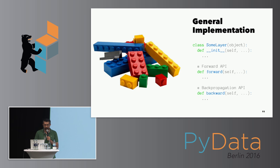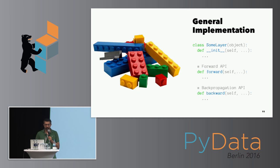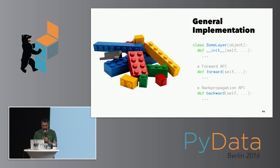Deep learning is a lot like playing with Lego because you can choose between a wide variety of different layers and stack them up via functional composition. But if you did not have automatic differentiation — as we have in Theano — your layer API would look something like this: each layer would have a forward method doing a matrix-vector multiplication with a non-linearity applied, and then a backward method where we calculate gradients and propagate them back down the layers via stored operations from the forward call.